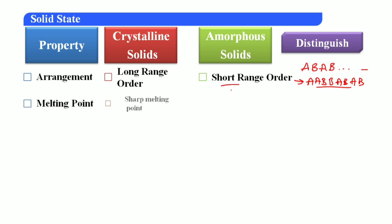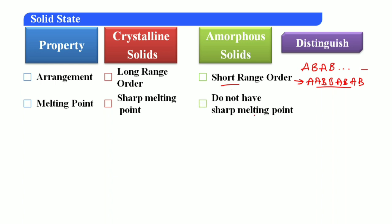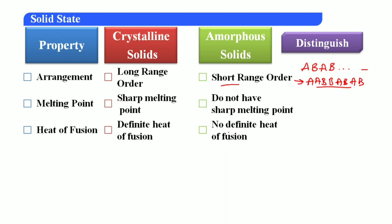Second difference — melting point: crystalline solids have a sharp melting point, whereas amorphous solids do not have a sharp melting point. Note: amorphous solids do have a melting point, but it is not sharp — that is the key difference. Heat of fusion: crystalline solids have a definite heat of fusion; amorphous solids do not have a definite heat of fusion. The word 'definite' is important here.